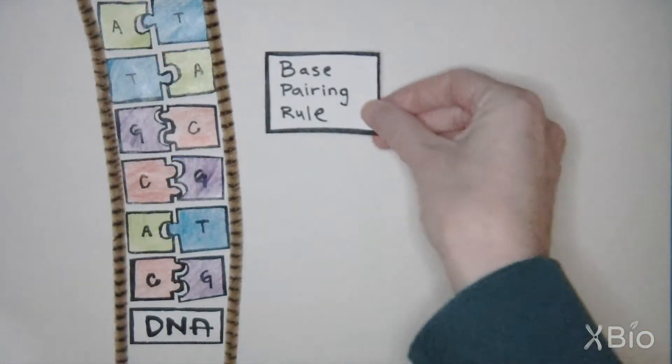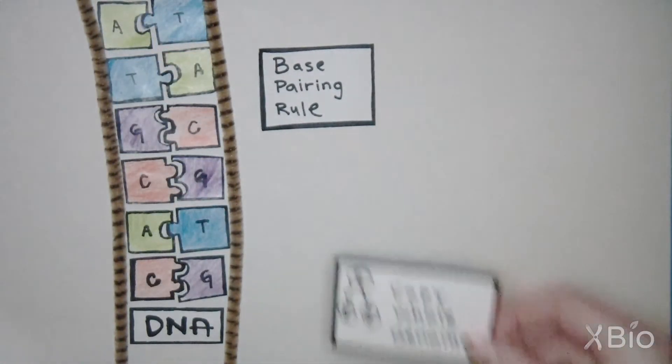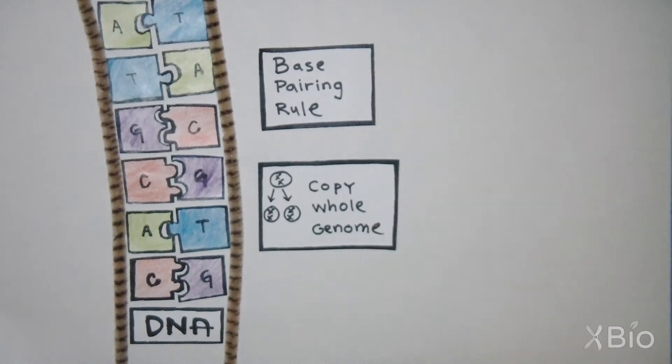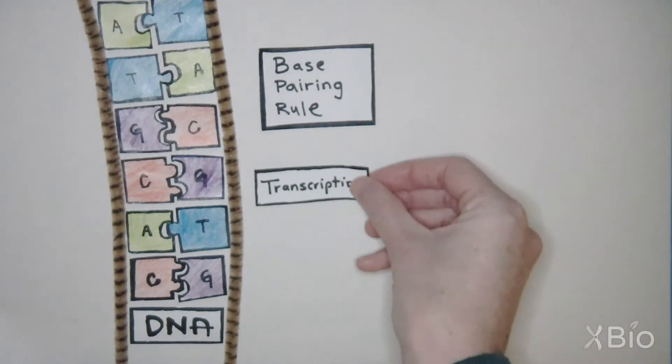This is called the base pairing rule, which is used to copy the entire genome from one cell to the next, and it's used for transcription.